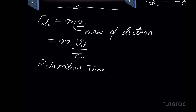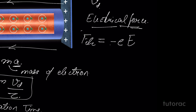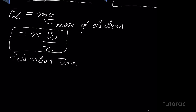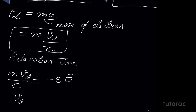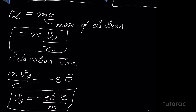If we equate these two expressions, we get m·Vd upon tau equals negative eE. To get the value of drift velocity, we rearrange to get Vd equals negative eEτ upon m. This is the value we get for the drift velocity.